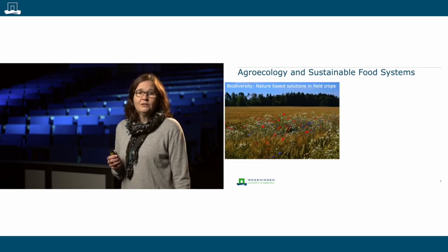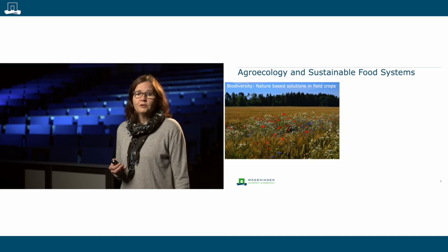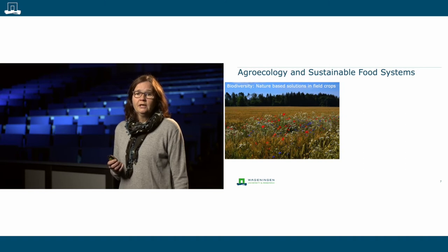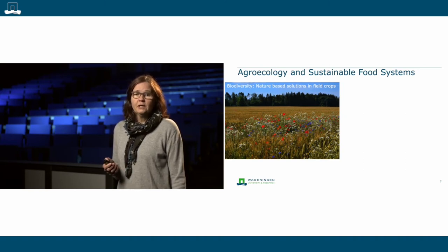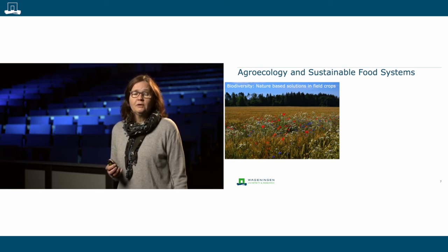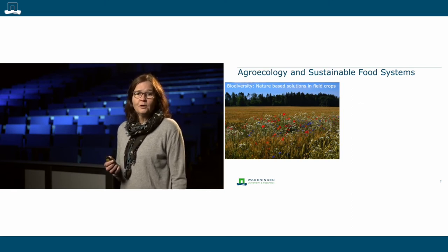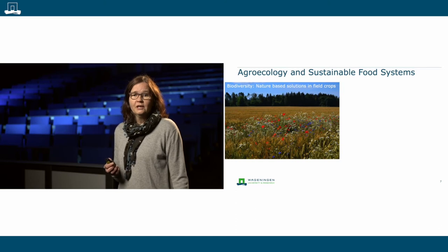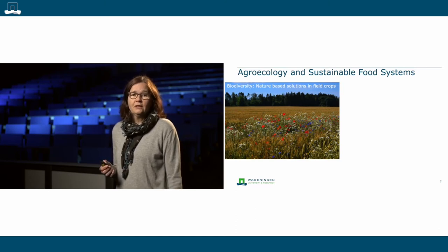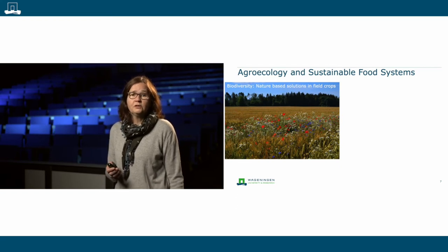Agroecology and sustainable food systems has a strong focus on biodiversity. The conservation and improvement of biodiversity is an important aspect in agroecology. This also involves nutrient management, the efficient use of water, and care for bio-interactions. On this slide, you can see a field with flower-rich field margins that attract natural pollinators, and thus will improve the quality of the agriculture being performed in such a field.